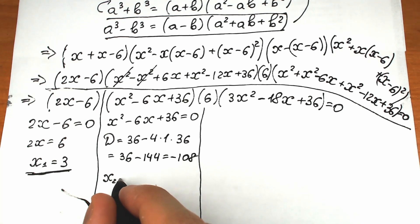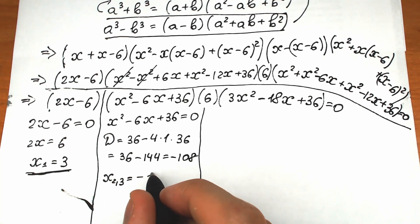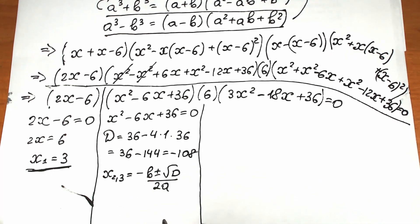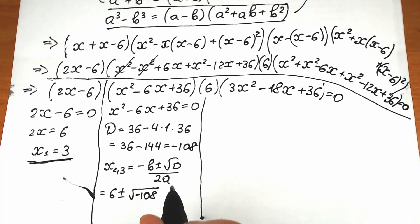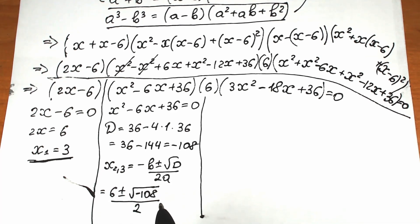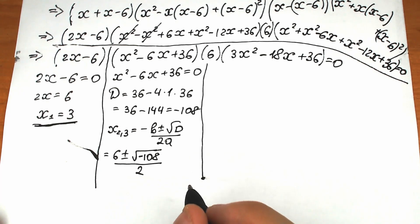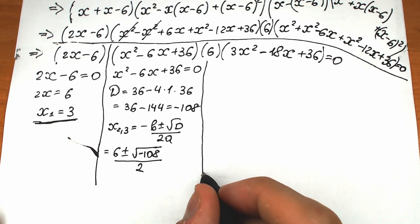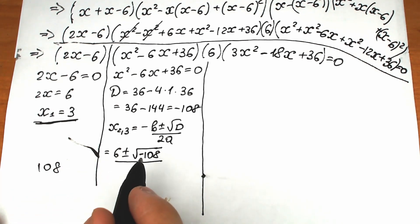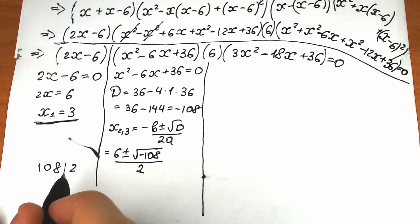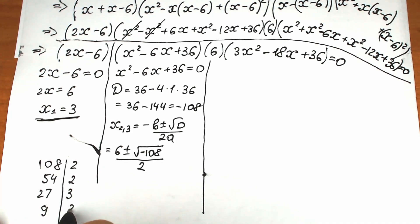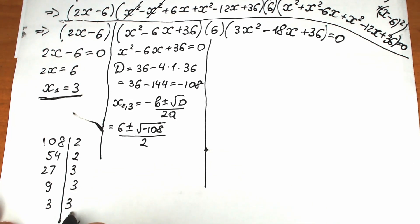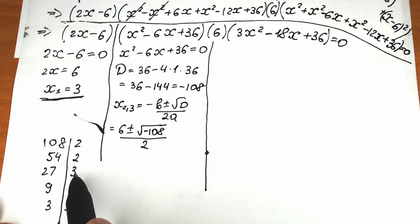Using the quadratic formula, x equals negative b plus or minus square root of discriminant, all over two a. Plugging in, we get six plus or minus square root of negative one hundred eight, all over two. Factoring one hundred eight as two squared times three squared times three, we simplify the square root.